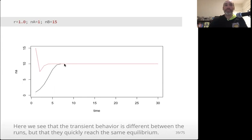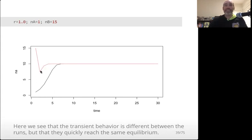When we start low, we go up in that sigmoidal shape. When we start high, we're in that overshoot state and we drop back down. But since the population growth rate isn't that high, it has a nice gentle return to steady state.